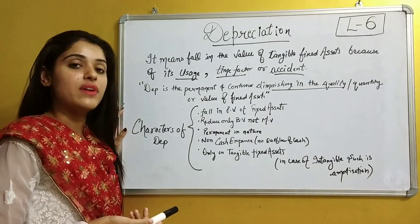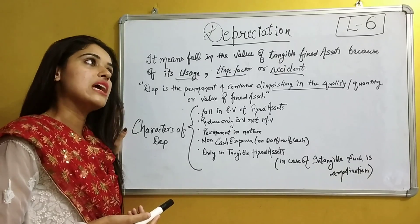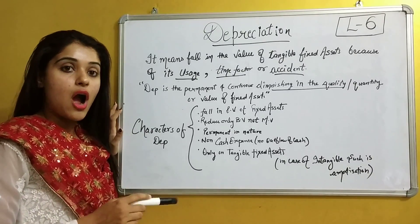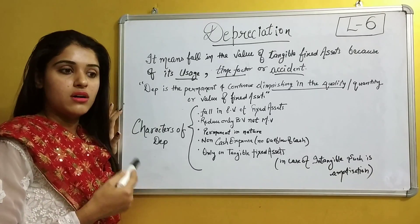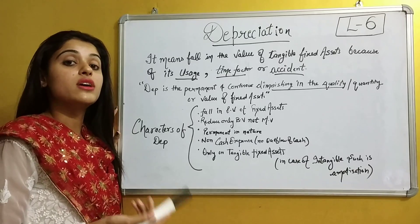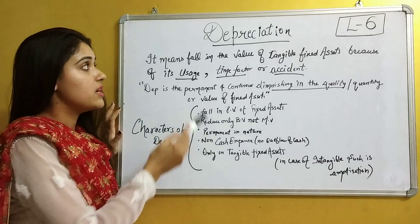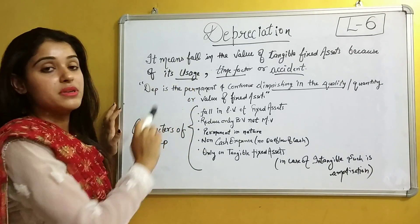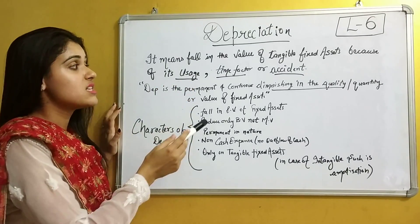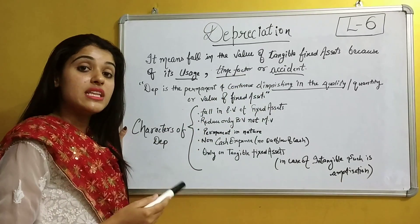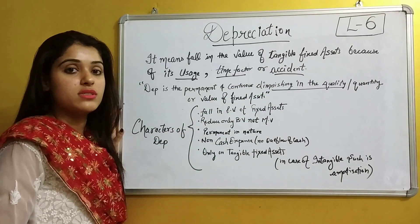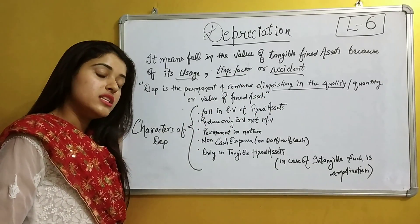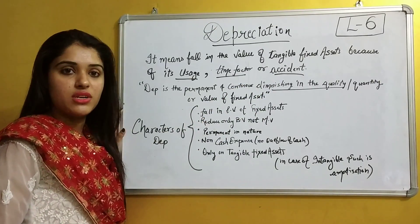Next is the time factor. Due to obsolescence of the technology, the reduction in the value of fixed assets is known as depreciation. And last but not least, there are accidental causes, like a breakdown of the machinery.